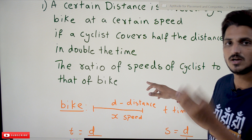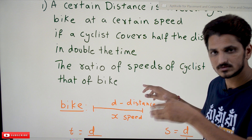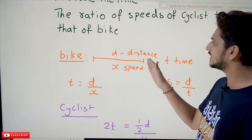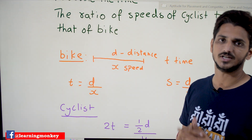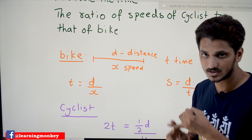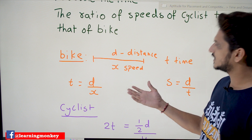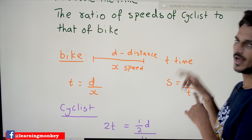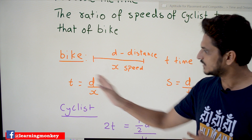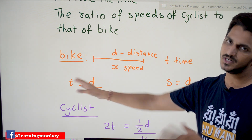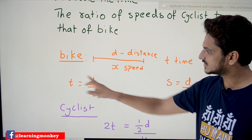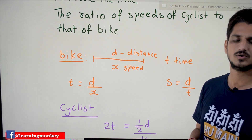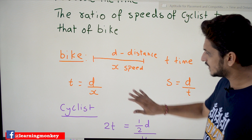We are assuming that the bike covers distance d using speed x in time t. These are all assumptions since no values are given. From speed = distance/time, we get x = d/t. This is our assumption for the bike.